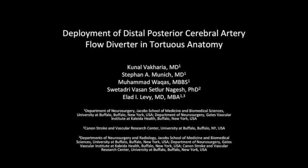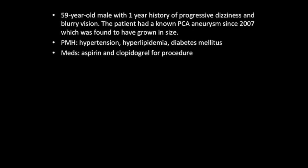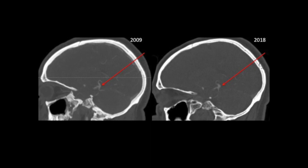In this next case, we review the deployment of a distal posterior cerebral artery flow diverter in tortuous anatomy. This case describes a 59-year-old male with a one-year history of dizziness and blurry vision. He had a known PCA aneurysm since 2007, which had grown in size significantly. Here is a CTA in 2009 and again in 2018, showing interval growth over nine years of this complex PCA aneurysm.